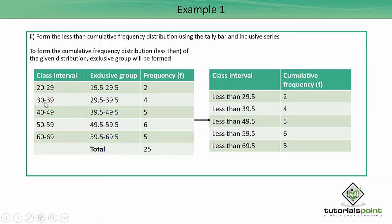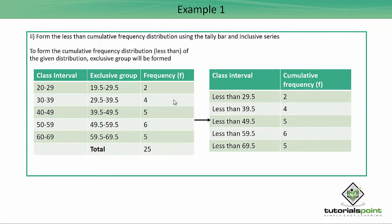To form the cumulative frequency distribution — less than — we need to form the exclusive group. To do this, I subtract 0.5 from the lower class limit and add 0.5 to the upper class limit. So the exclusive groups are formed. Since I need the less-than cumulative frequency distribution, I write: less than 29.5, less than 39.5, and so on, taking the frequency values from part A. This gives us the completed less-than cumulative frequency distribution table.